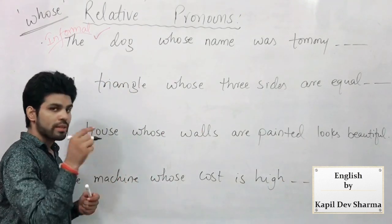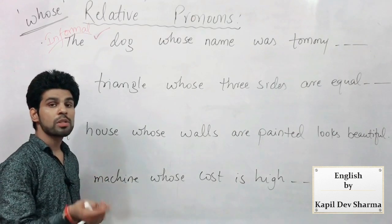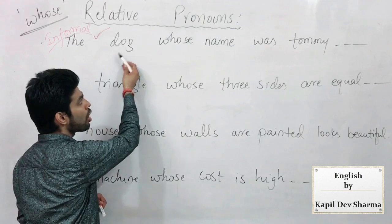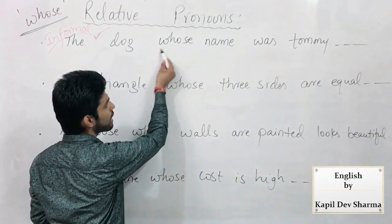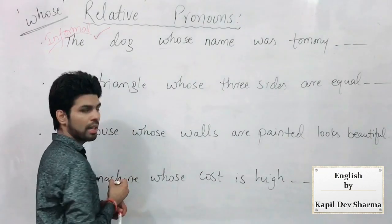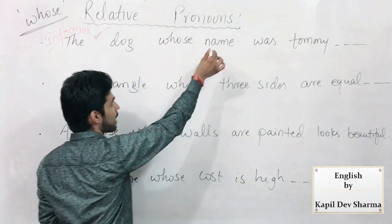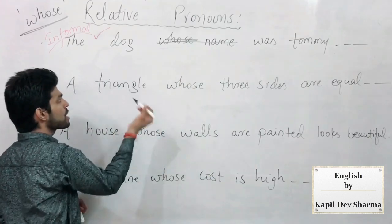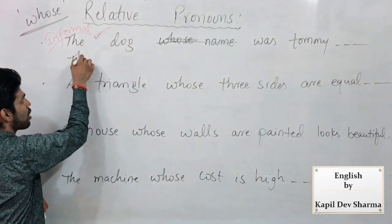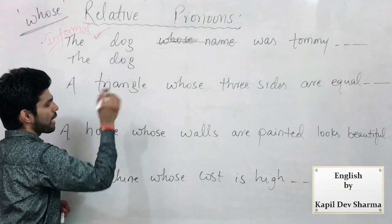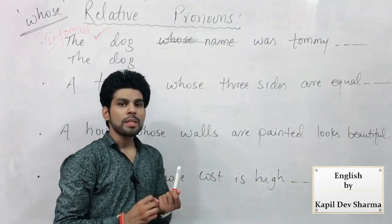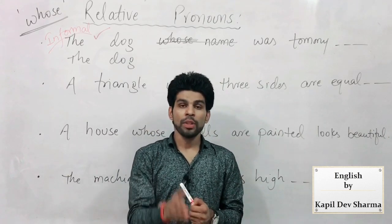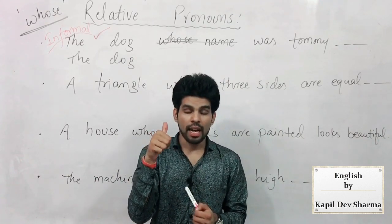But when it comes to examination point of view, when it comes to formal English — dog is a non-living (non-human), and using 'who' or any of its derivatives for non-living will be considered wrong. So this sentence can be rewritten — it will be considered wrong here; 'whose name' should not be written. Then what is the correction? Write: 'The dog the name of which...' New things take a little time to understand — please work hard with me. 'The dog whose name' is wrong; so 'the dog the name of which' — 'which' is used for dog. 'Jiska naam' → 'the name of which.'